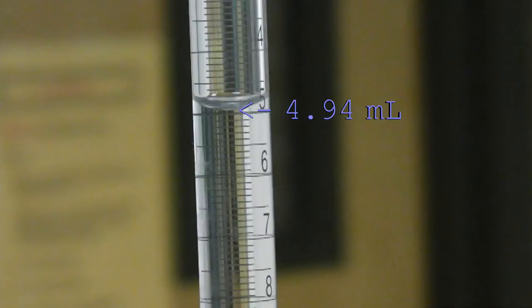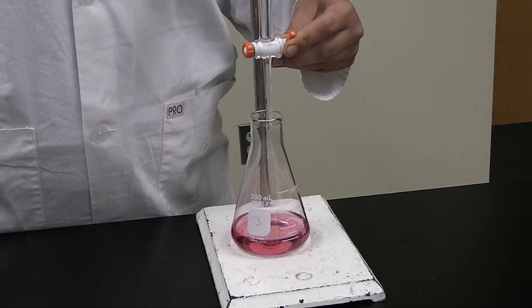Once you have done this, make sure that you take your initial reading of the burette, which in this case is 4.94 milliliters. You are then ready to begin your titration.